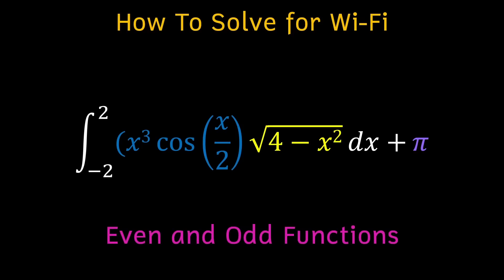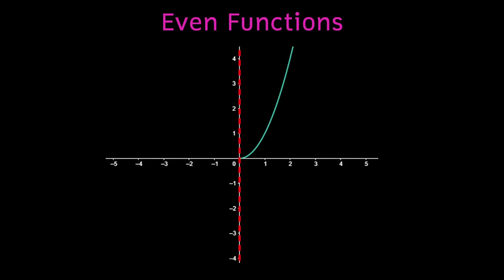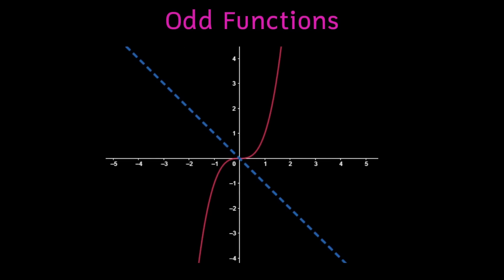An even function is a function that has a graph symmetrical to the y-axis, and an odd function has a graph symmetrical to the line y equals negative x. Mathematically, what this means is that in an even function for any x value, the negative of that x value outputs the same y value.